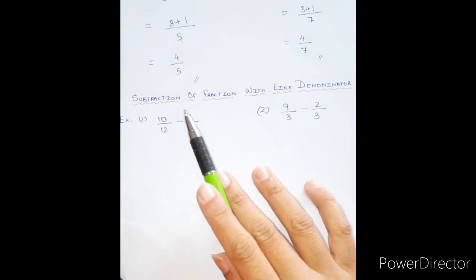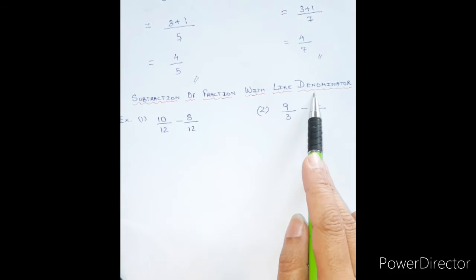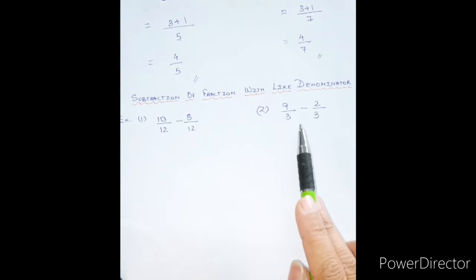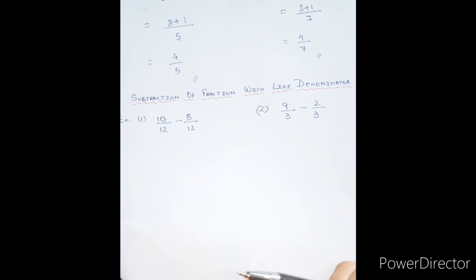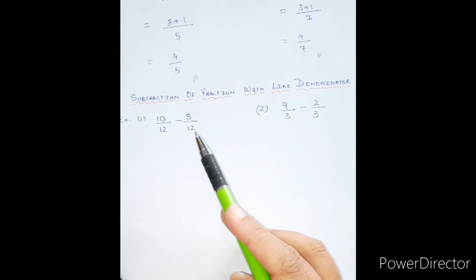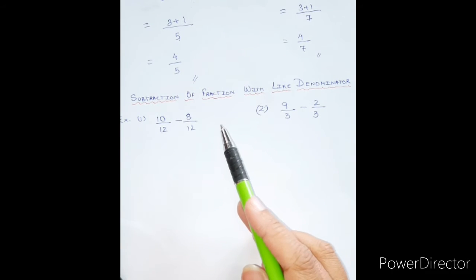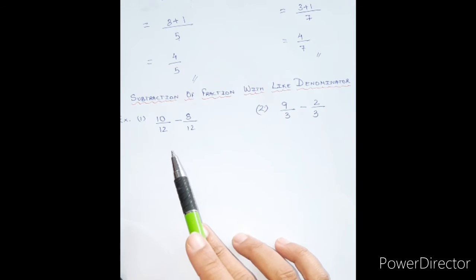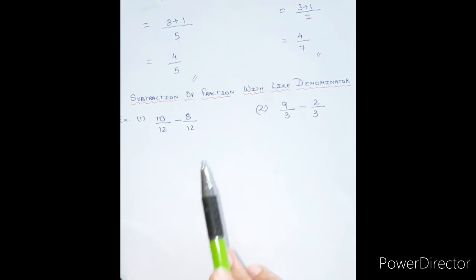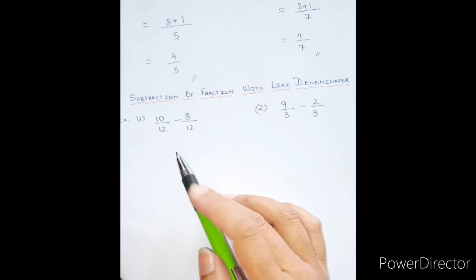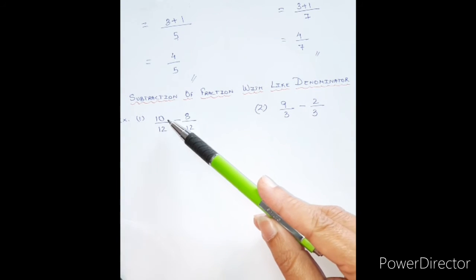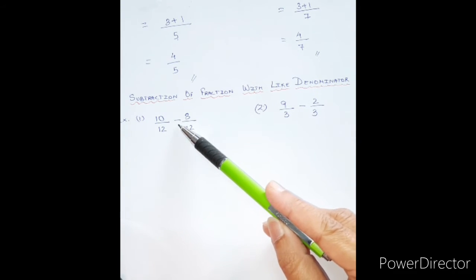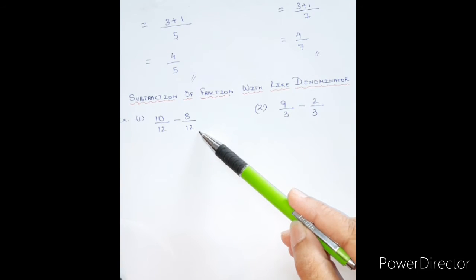In a similar manner, we also have subtraction of fractions with like denominators. Remember: like denominators means the denominators are the same. We can solve it in one step by just subtracting the numerators, but be careful — the denominator should always be the same. Let's look at the example: 10 upon 12 minus 8 upon 12.